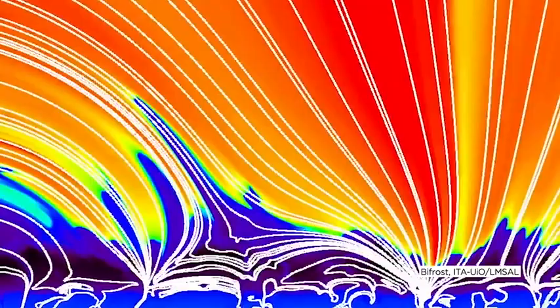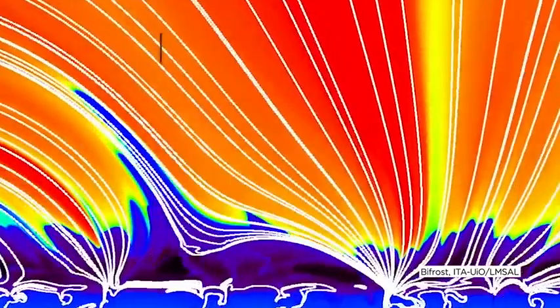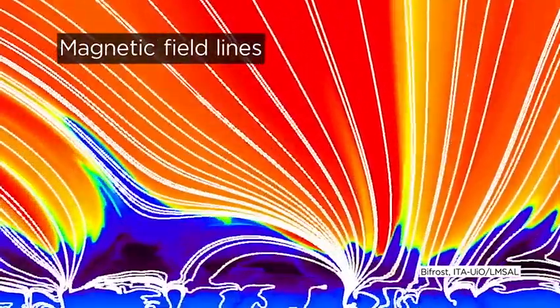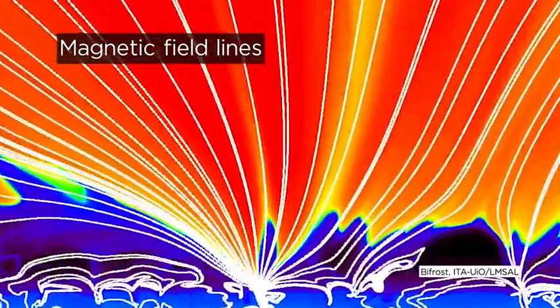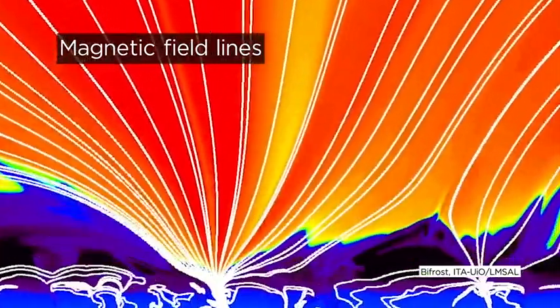Scientists believe that this interaction drags tangled magnetic field lines up above the sun's surface, allowing them to straighten and expel solar material at high speeds, similar to a whiplash.